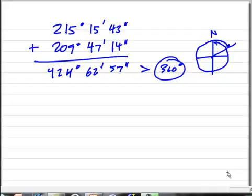So here's what we're going to do. We're going to convert this. Here I can see that I have less than 60 seconds in my seconds column, so that's going to be okay. But when I look at 62 minutes I know that is really one degree and two minutes. So I'm going to convert that to two minutes and add a degree to my degrees column.